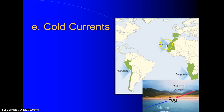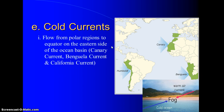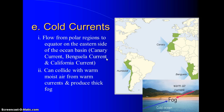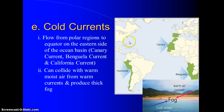Cold currents include the Canary Current, the Humboldt Current, and the Benguela Current. Cold air sits above cold currents, and they flow from the poles down along the east side of the ocean basin. The California Current, not shown on the diagram, is cold in the Pacific. Cold currents can collide with the warm, moist air that warm currents bring, like the Gulf Stream, producing very thick fog. The cold Labrador Current swings down and meets the warm Gulf Stream, producing big fogs in that region.